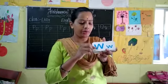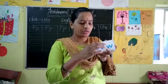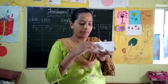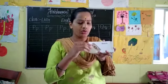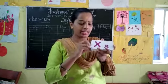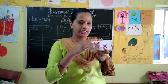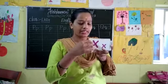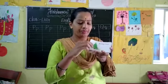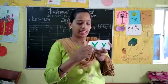And next letter is W. Capital W, small w. W for watch. W for watch. And next letter is X. Capital X, small x. X for Christmas. X for Christmas. And next letter is Y. Capital Y, small y. Y for yacht. Y for yacht.